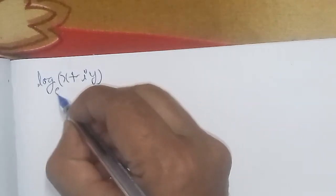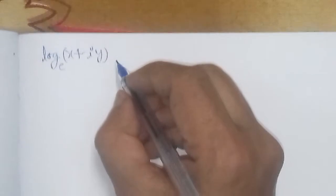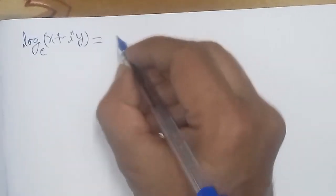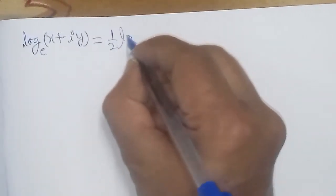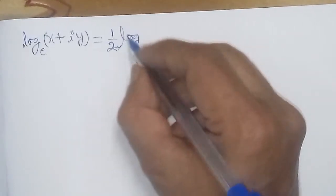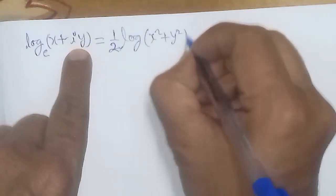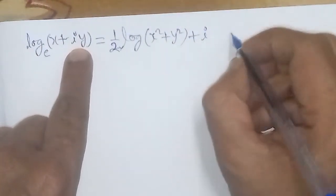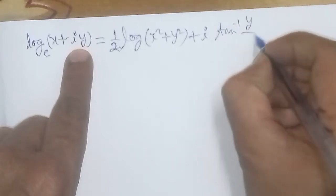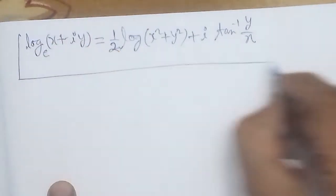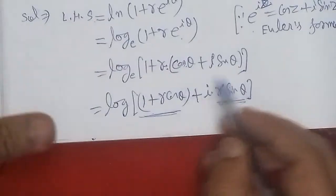I write here the formula for the logarithm of a complex number with base e. We know that this formula is: ½·log(real part² + imaginary part²) + i·tan⁻¹(imaginary part / real part). So we apply this formula to our problem.